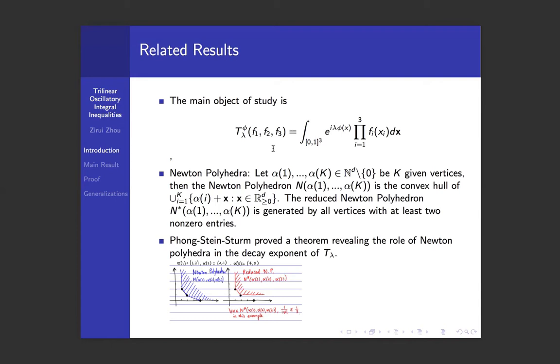To give a short review of previous results, one important concept is the Newton polyhedra. Given a set of multi-indices in dimension d, the Newton polyhedra generated by this is the convex hull of the union of each α_i plus R_+^d. The reduced Newton polyhedra is defined similarly, generated by those multi-indices with at least two non-zero entries.